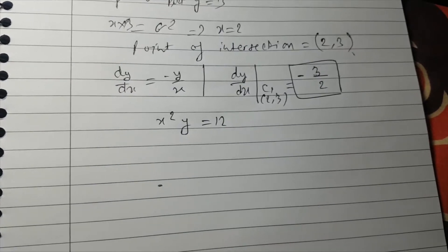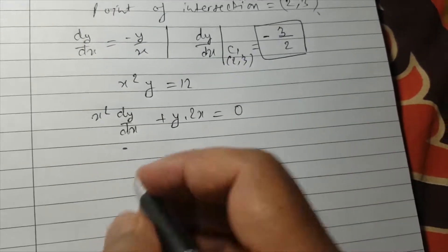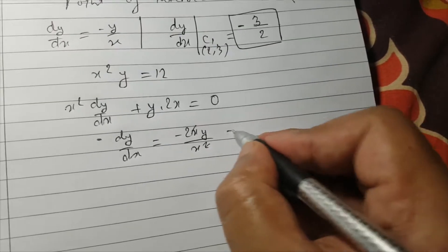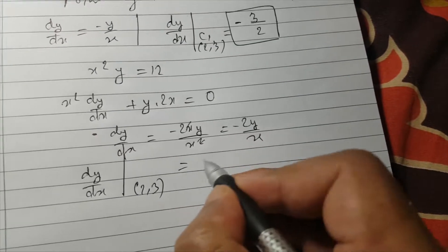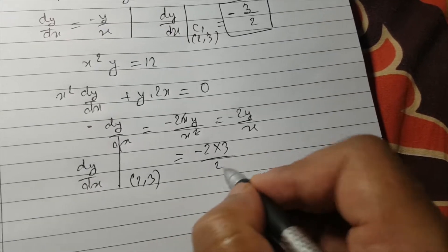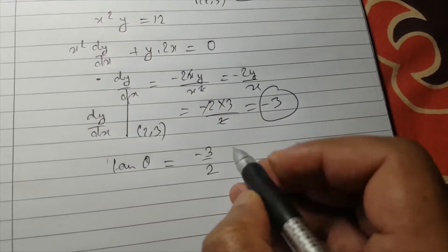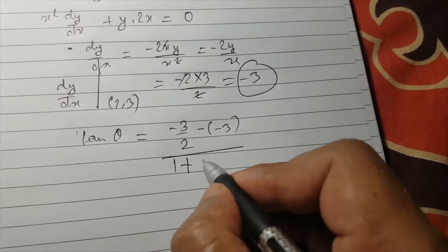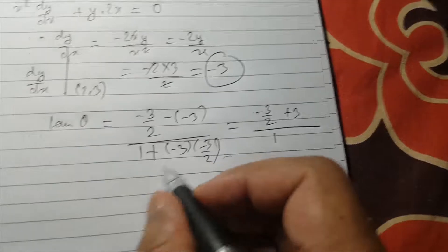For the second curve x²y = 12, using the product rule: x² dy/dx + 2xy = 0, so dy/dx = -2xy/x² = -2y/x. At (2, 3), dy/dx of C2 = -2(3)/2 = -3. Now applying the formula: tan(theta) = (dy/dx of C1 minus dy/dx of C2) over (1 plus dy/dx of C1 times dy/dx of C2), which is (-3/2 minus (-3)) over (1 plus (-3/2)(-3)).